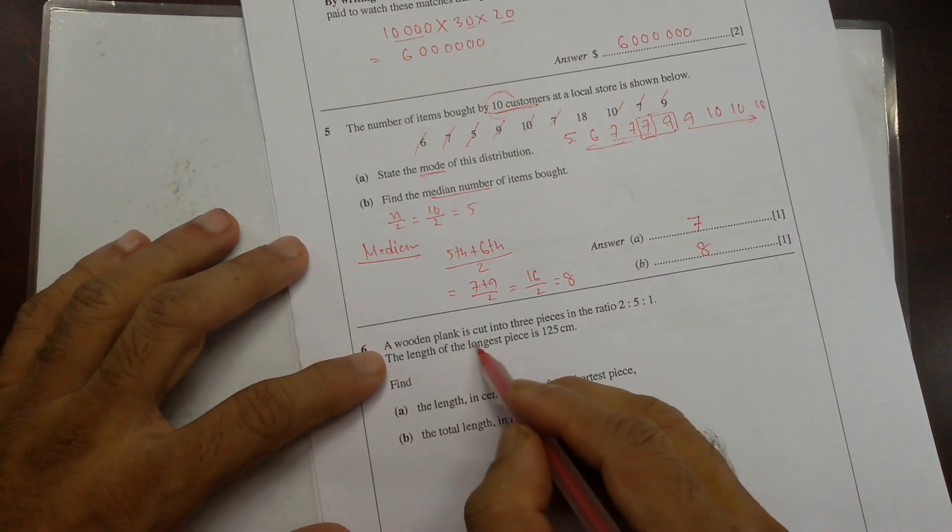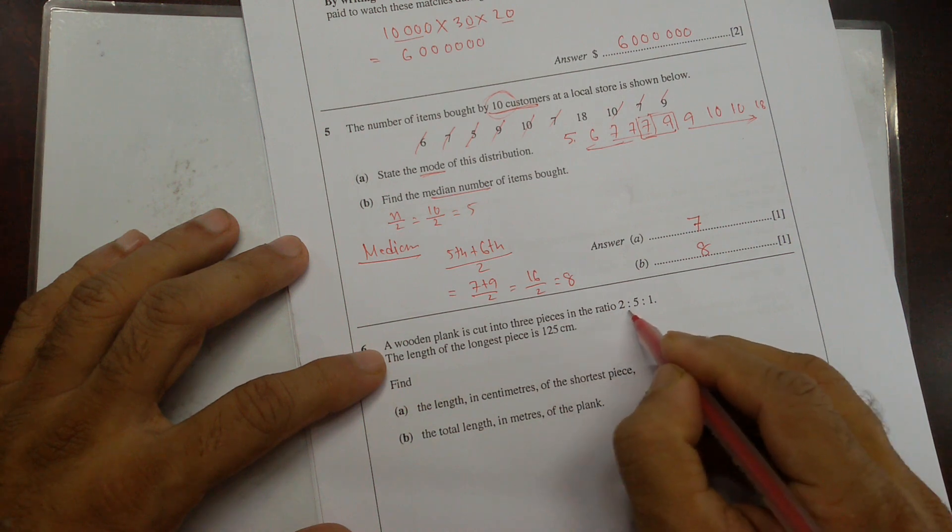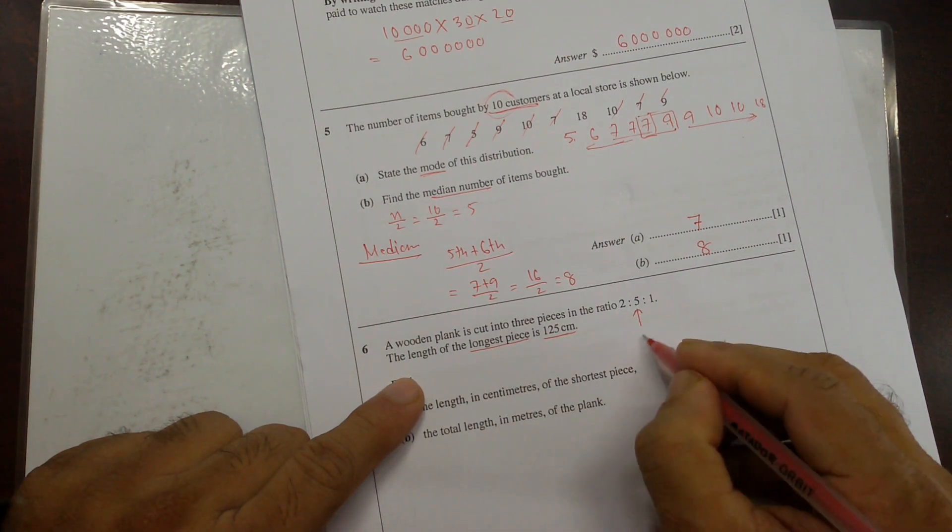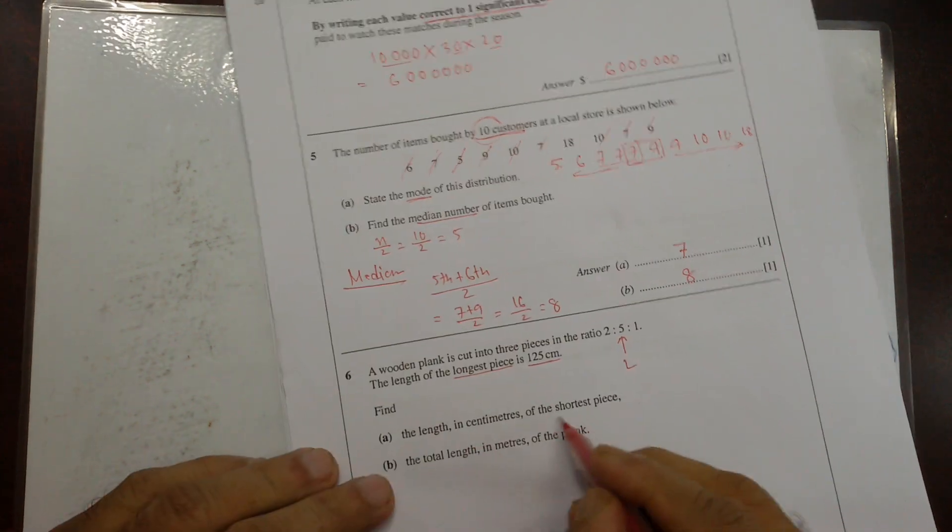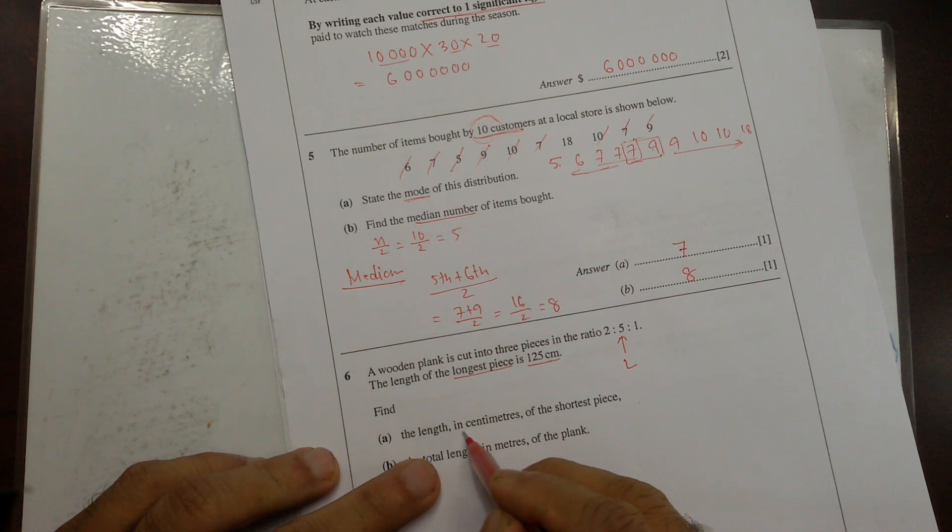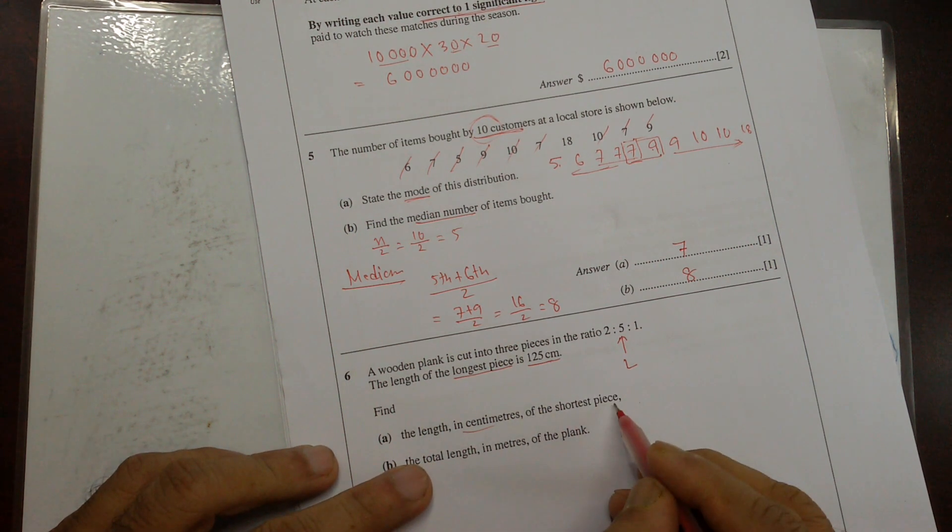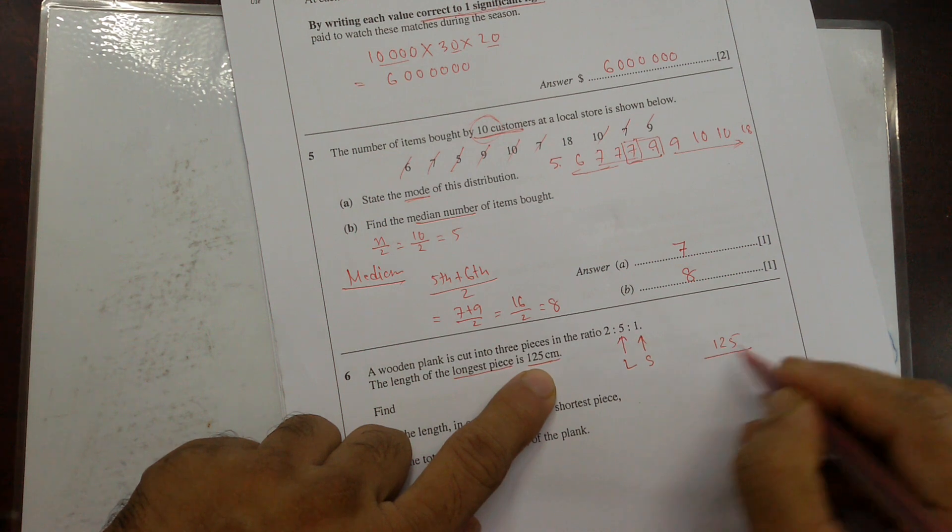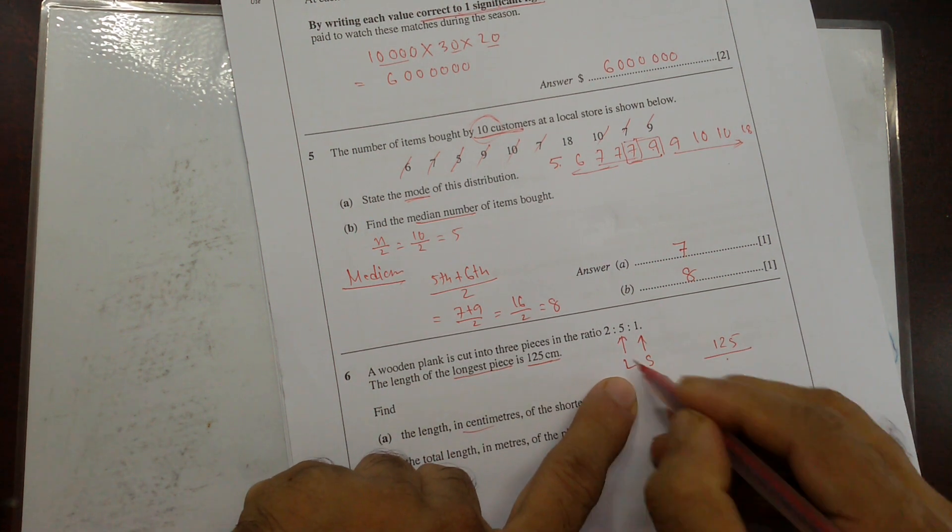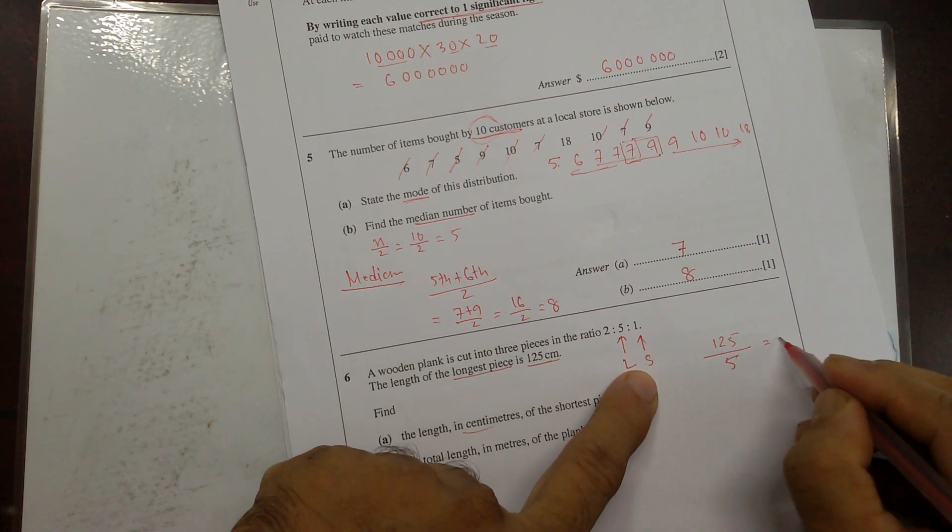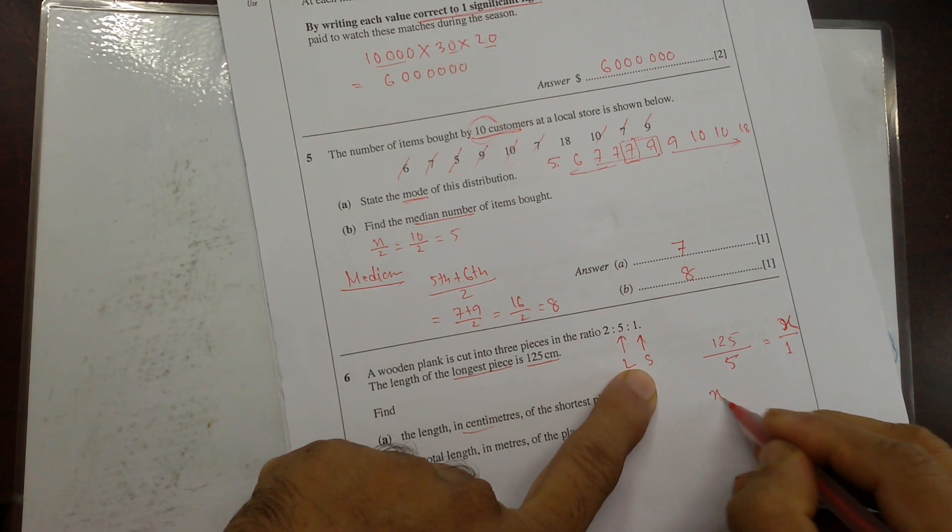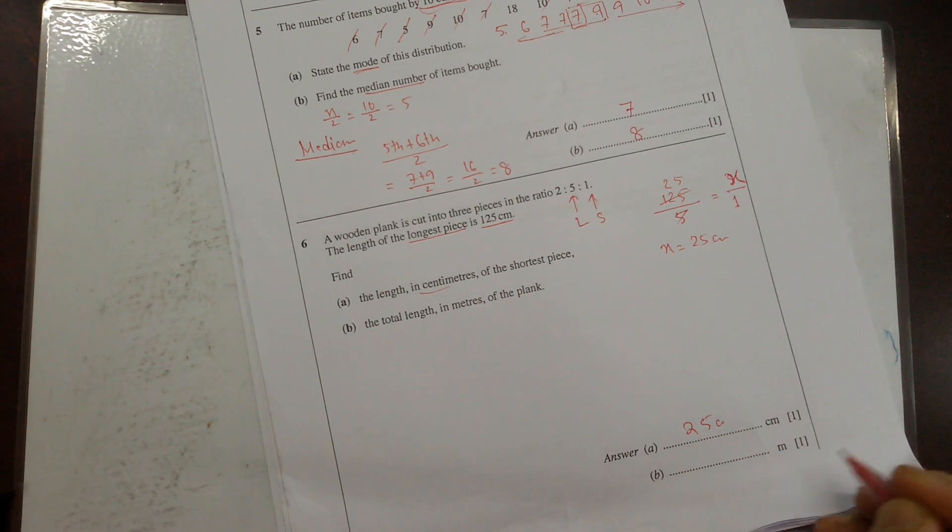Next one. The wooden plank is cut into three pieces in ratio 2 is to 5 is to 1. The length of the longest piece is 125 centimeters. So longest piece is the longest ratio I have. This is the longest. Of shortest piece. So this is the shortest piece. So 125 centimeter. And the longest piece ratio is 5. Now, shortest piece ratio is 1. And then we're going to find out this shortest piece. So this X is going to be, cross it out, 25 centimeters. So it's going to be 25 centimeters.